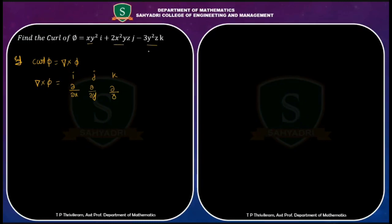These three terms you have to write in the bottom row: xy², then 2x²yz, and then −3y²z.